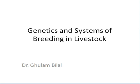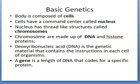Today we will study some genetics and systems of breeding in livestock. Our body is made up of cells. Cells have a command center called the nucleus. The nucleus has thread-like structures called chromosomes. Chromosomes are made up of DNA and histone proteins. DNA is deoxyribonucleic acid — it is the genetic material that contains instructions in each cell of organisms. A gene is a part of a length of DNA that codes for a specific protein.